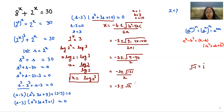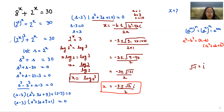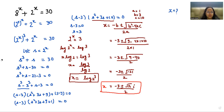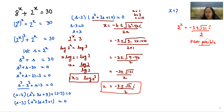Since √(−31) = i√31, we get s = (−3 ± i√31) / 2. Substituting back, 2^x = (−3 ± i√31) / 2, which gives a complex/negative value. Since 2^x must be a positive real number, we reject this solution. Therefore, the only valid solution is x = log₂(3).